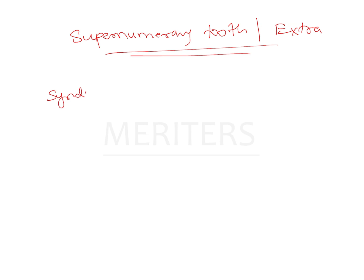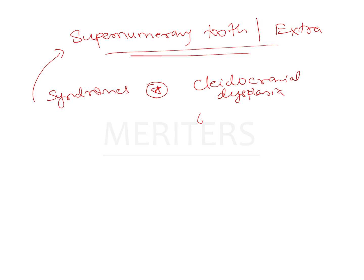The syndromes associated with supernumerary teeth are also important. These include cleidocranial dysplasia, Gardner syndrome, and cleft lip and palate. This can be asked in examinations — which syndromes are associated with supernumerary teeth.